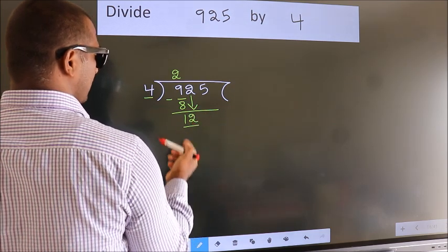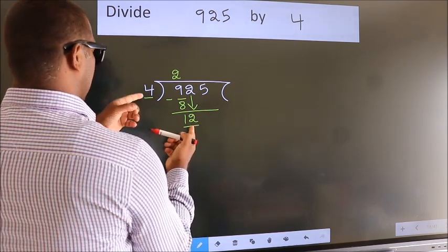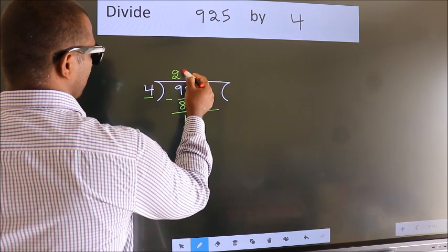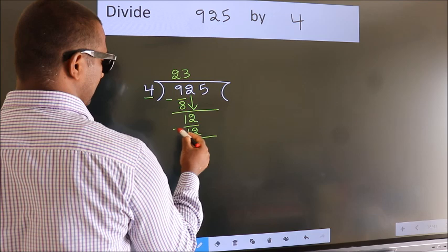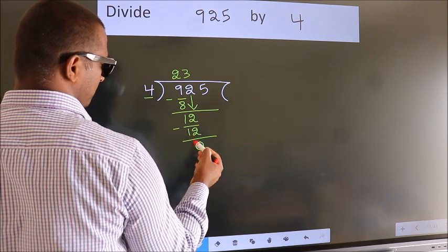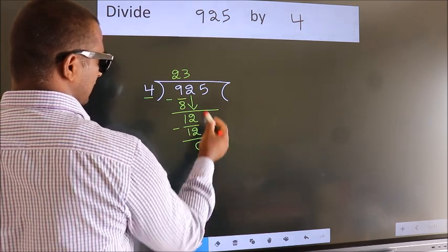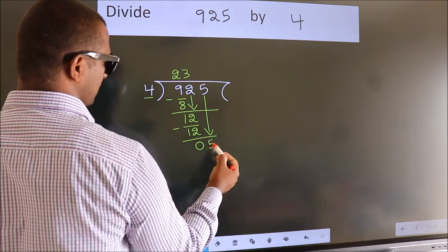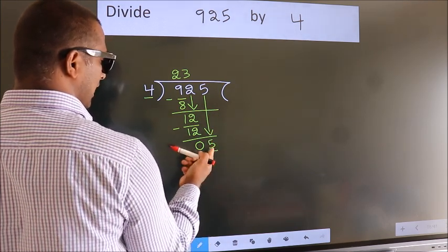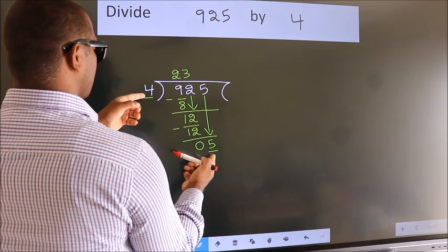So 12. When do we get 12 in the 4 table? 4 times 3 is 12. Now we subtract, we get 0. After this, bring down the beside number, so 5 down. So 5 - a number close to 5 in the 4 table is